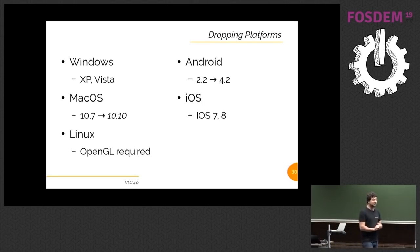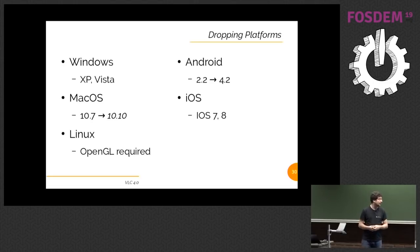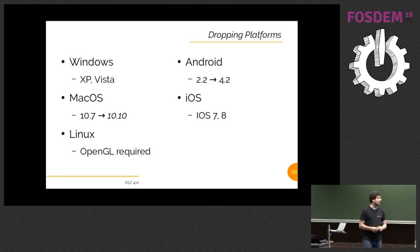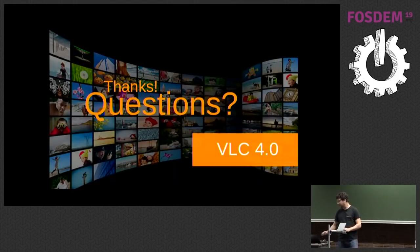We promised to drop platforms, and this is exactly what we did. We are dropping Windows XP and Vista, dropping macOS 10.7 — actually we're going to drop up to 10.10, sorry for those who care. On Linux, we are deprecating everything related to Xvideo, so you'll need OpenGL. On Android, we are dropping 2.2, 2.3, 3.0, 4.1 and so on — we will require Android 4.2. And on iOS, we're dropping iOS 7, 8, 9, maybe 10.